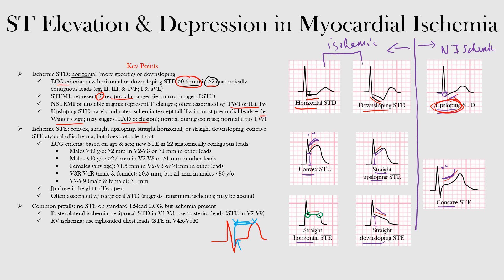For ischemic ST elevation, the morphologies include convex, straight upsloping, straight horizontal, and straight downsloping. Concave ST elevation is atypical but does not rule out ischemia. EKG criteria are based on age and sex with new ST elevation in at least two anatomically contiguous leads — the specific thresholds vary and are listed for reference.